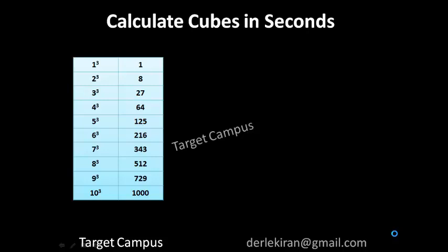Cubes are very much useful in most of the topics of aptitude preparation. You must know cubes till 10 — that is simple. The big deal comes when questions are asked like: what is 100 into 1.08 raised to 3? For example, what amount becomes after 3 years at 8% per annum compound interest with a principal of 100? We will see an awesome technique to calculate cubes that is going to save your time.